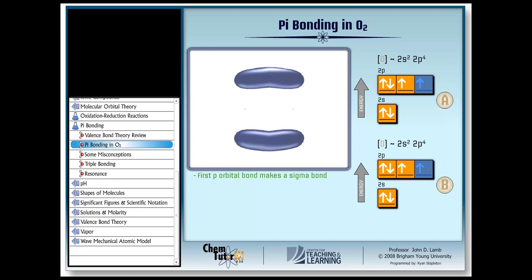Indeed, notice that there is no electron density in the bond axis at all. So this can't be a sigma bond. Instead, it's called a pi bond.